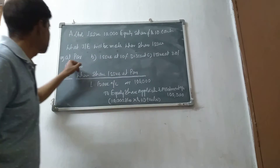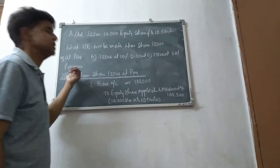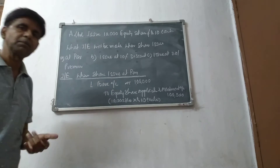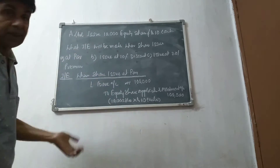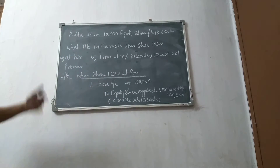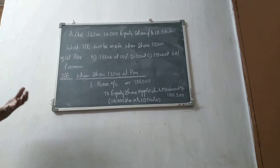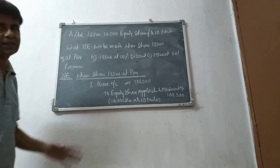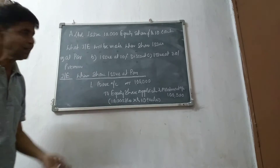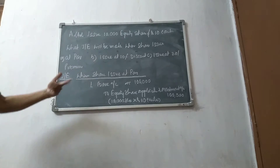When share is issued at par — par means same value — at issue at 10% discount, or issue at 20% premium? Look at this: company A Limited issues 10,000 equities of rupees 10 each. What journal entries will be made when shares are issued at par, at 10% discount, or at 20% premium? That's our entry.